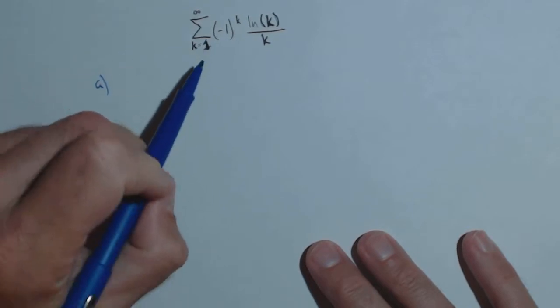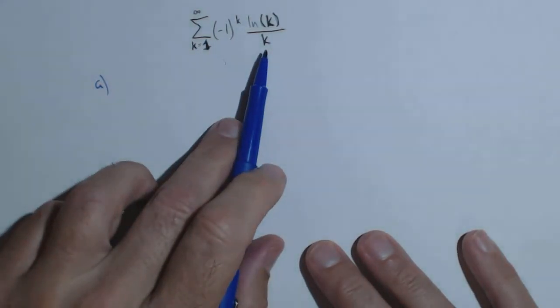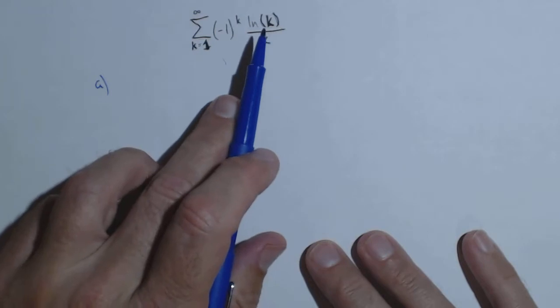So first part, let's see if it's convergent. What we have is an alternating series. We have an alternating piece here. These terms will always be positive.